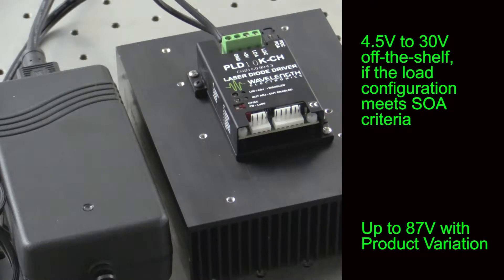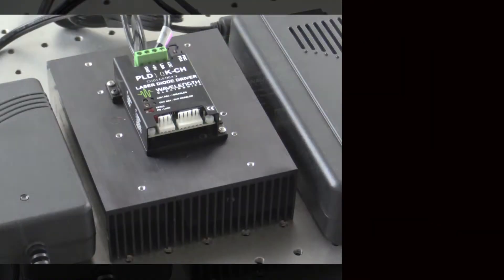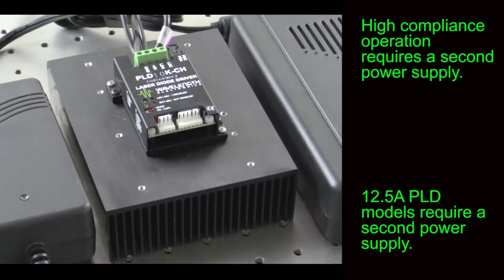Product variations are available to operate up to 87 volts. For these higher voltages, a second power supply is required. A second power supply is also necessary for the 12.5 amp units.